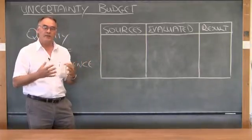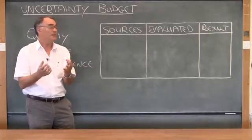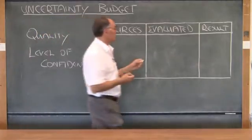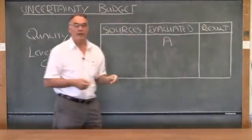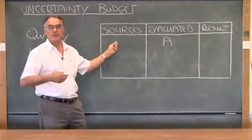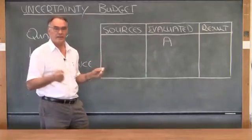Where we have a set of data in which we can see some scatter in those data, we can use a type A evaluation of uncertainty. And that implies that we consider that the source of uncertainty that has to be evaluated is the scatter in the data.